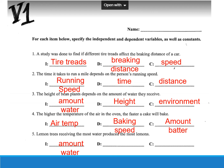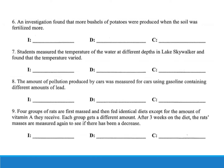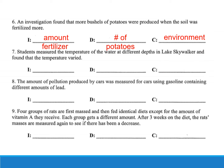Number five: lemon trees receiving the most water produced the most lemons. The amount of water is what we're changing on purpose, so that's the IV. The DV is the number of lemons, and the control defaults to the same environment. Number six: more bushels of potatoes were produced when the soil was fertilized more. The IV is the amount of fertilizer, the DV is the number of potatoes collected, and the control is the same environment — same sunshine, same soil, same amount of water.